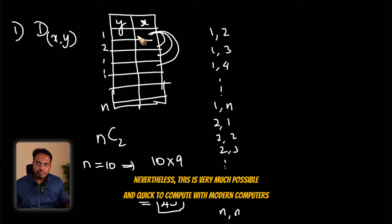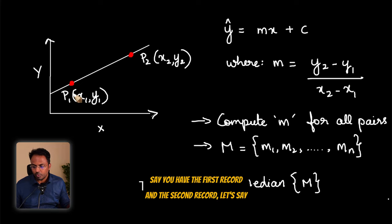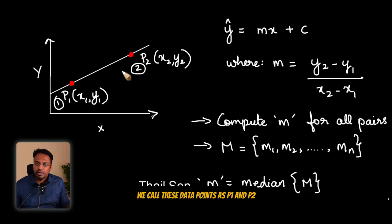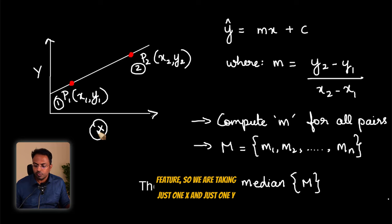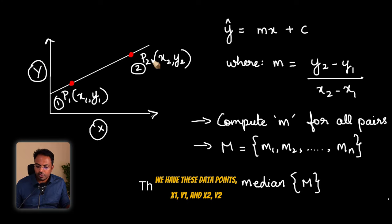Now let's start by taking one such pair. Say you have the first record and the second record. We call these data points as p1 and p2. Now since we are taking just one feature, this is easy to understand with just one feature, so we are taking just one x and just one y. And we have these data points x1,y1 and x2,y2.